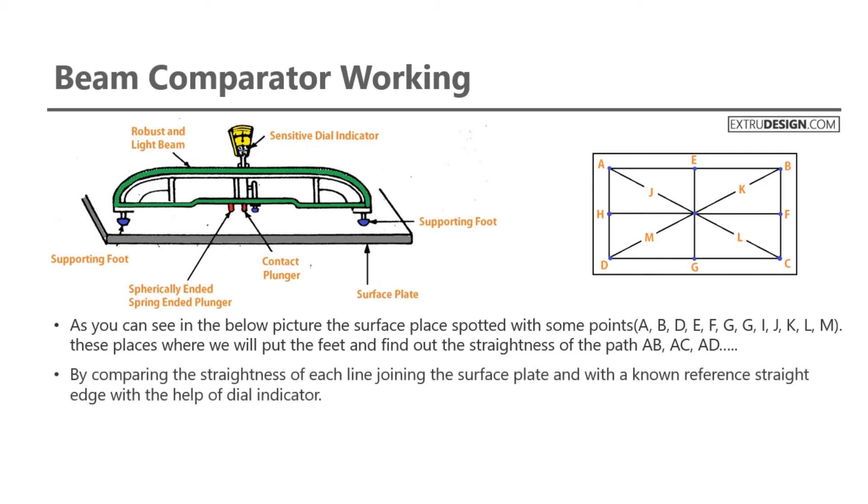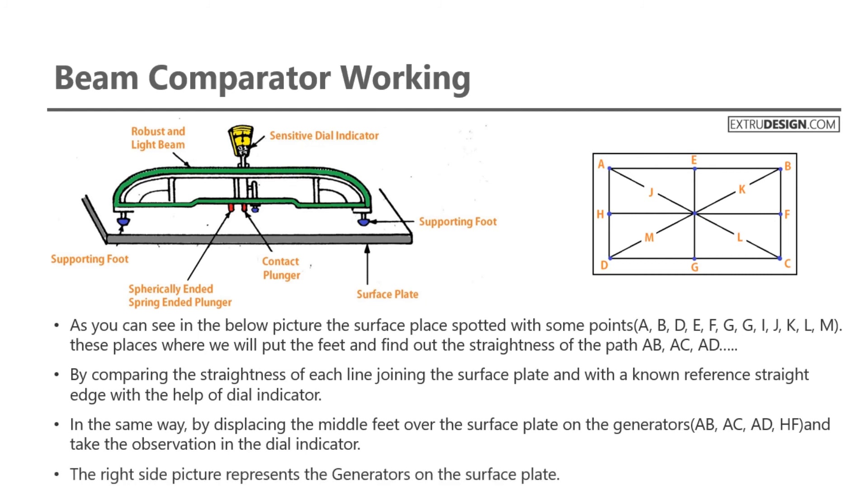By comparing the straightness of each line joining the surface plate with a known reference straight edge using the dial indicator. In the same way, by displacing the middle feet over the surface plate on the generators and taking the observation in the dial indicator. The right side picture represents the generators on the surface plate.